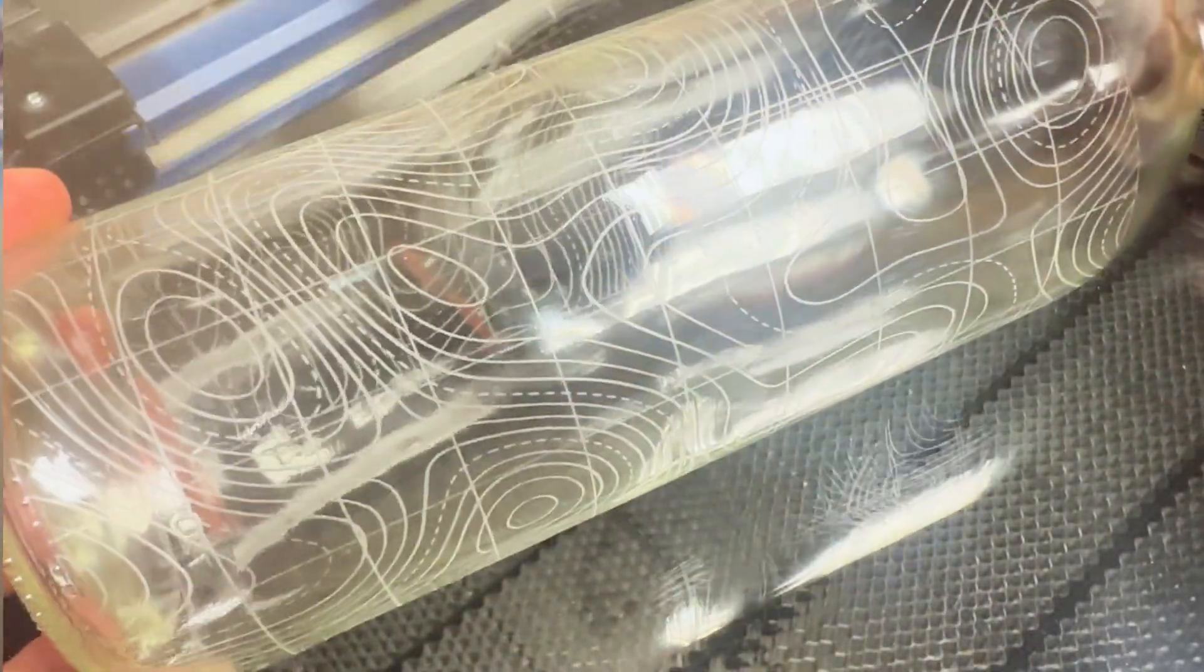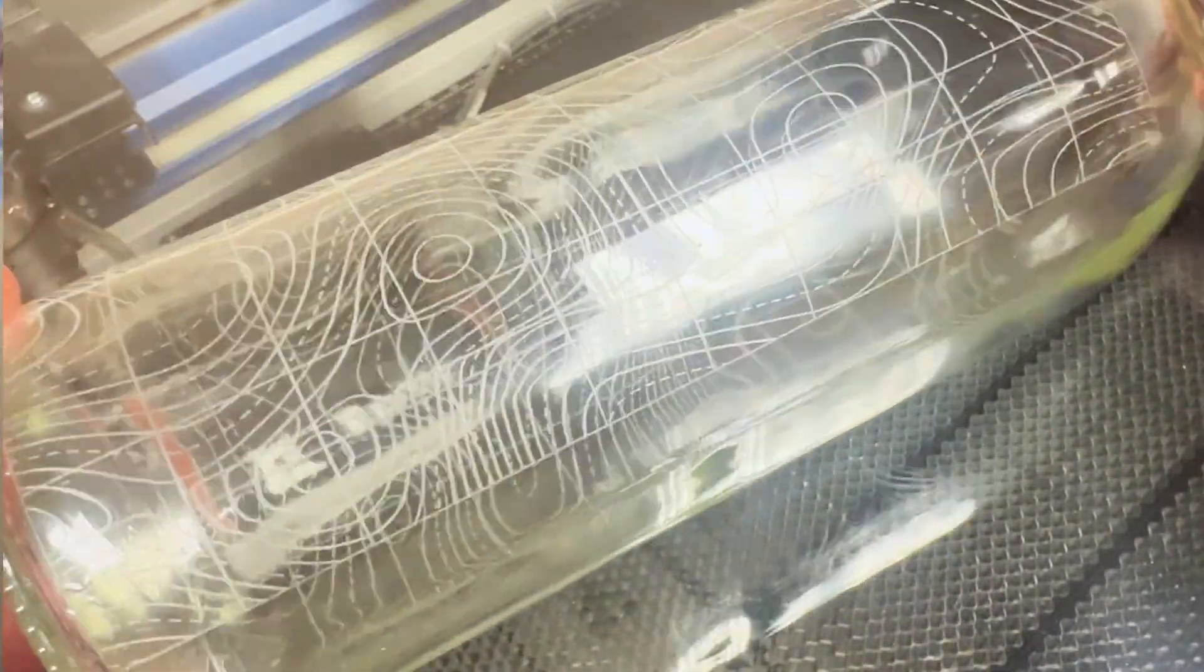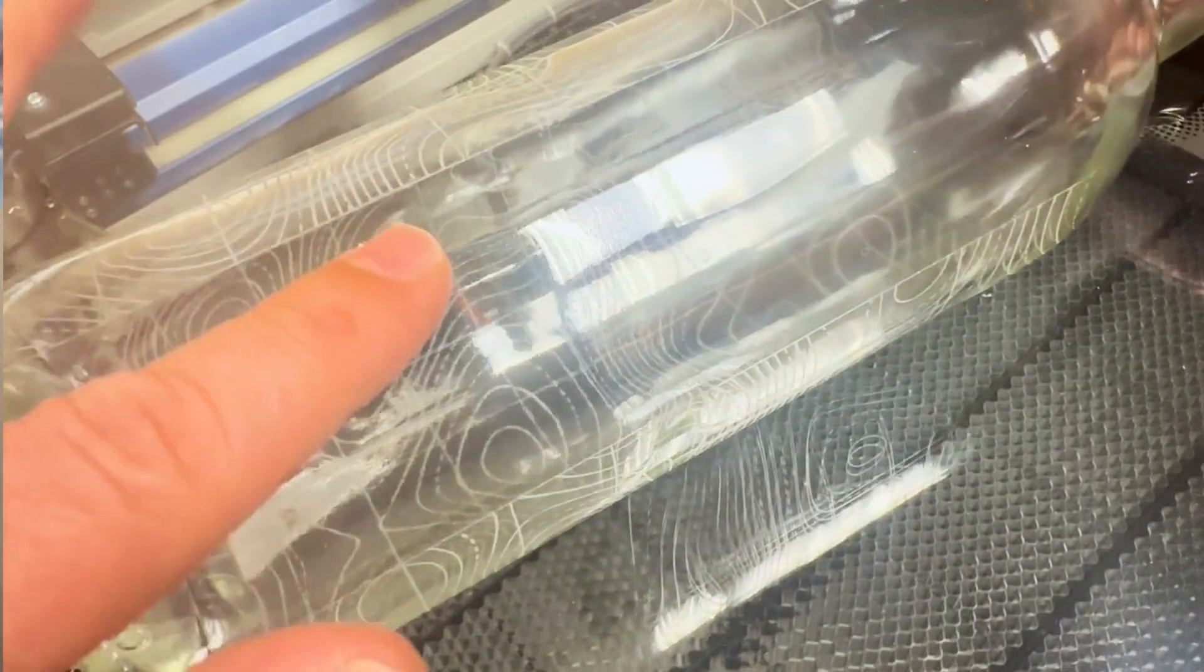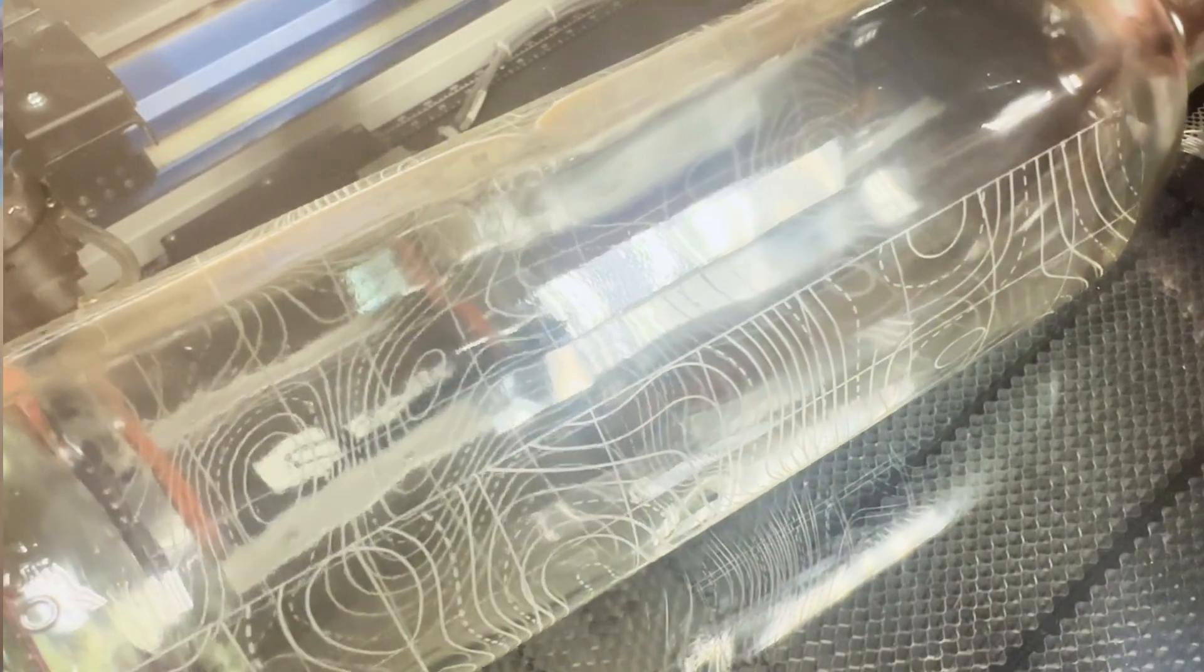Today we're going to be using a bottle that we've pre-engraved with a wraparound graphic. Now a lot of customers like to do the final customization at the end, so what we've done is left an area where we can add in the name of the winery and a custom message for the customer that can be engraved at the last minute and you can find that center point really easily with this method. Let's go ahead and get started.